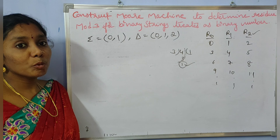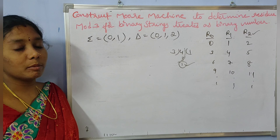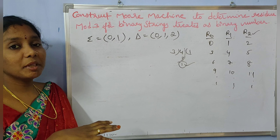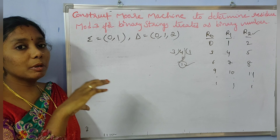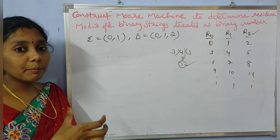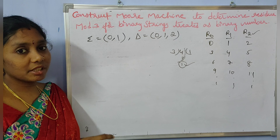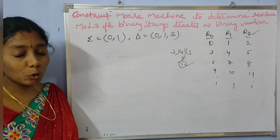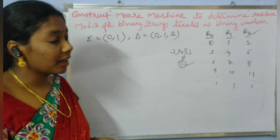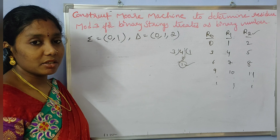We have three kinds of outputs: 0, 1, and 2. If processing a string produces output 0, the string is divisible by 3. Output 1 means the remainder is 1, and output 2 means the remainder is 2. We have three outputs, and before constructing the Mealy machine, let us first construct the DFA for the same problem.